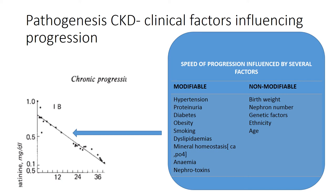Ethnicity is another non-modifiable factor — Aborigines, Africans, and African Americans tend to progress faster than Caucasians. Age also matters: infants with CKD are more likely to progress during infancy, and another period of accelerated progression occurs during the growth spurt of puberty. Among modifiable risk factors, hypertension is important because systemic hypertension leads to higher pressures at the glomerulus, increasing the risk of hyperfiltration and faster progression.